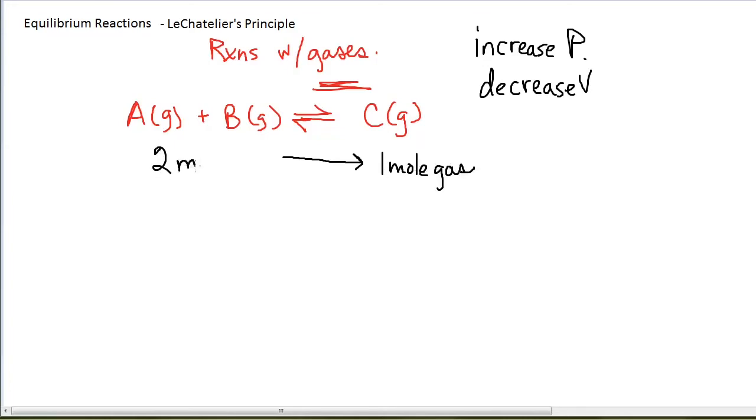because there's only one mole of gas on this side. On the left, there are two moles of gas, and so the reaction will shift to the right with the fewer moles.